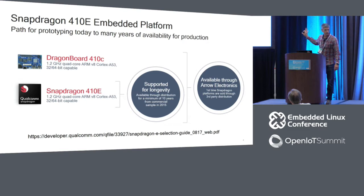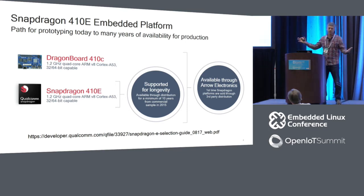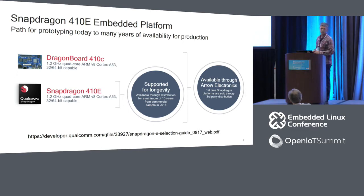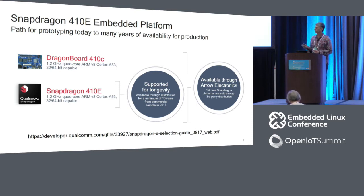The Snapdragon 410E part is a long-term availability part — if you're prototyping and building something today, that part is going to be around for 10 years total. The DragonBoard 410C is a great platform for prototyping. Both are sold through Arrow. There's also a link to other embedded platforms for other commercial options for the 410E.